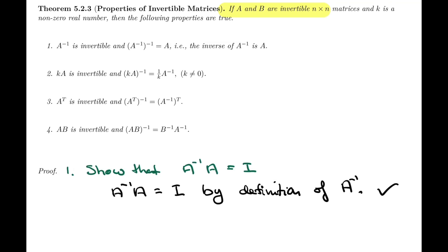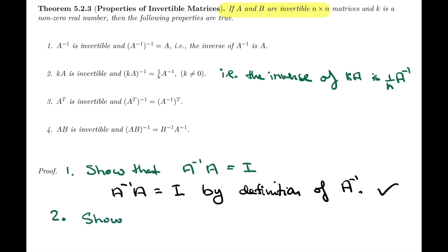Now we're ready to look at number two. Number two says that if A is invertible, then kA, where k is a non-zero scalar, is also an invertible matrix, and its inverse is 1 over k times A inverse. In other words, the inverse of kA is 1 over k times A inverse. So we need to show that kA times 1 over k times A inverse is equal to I.